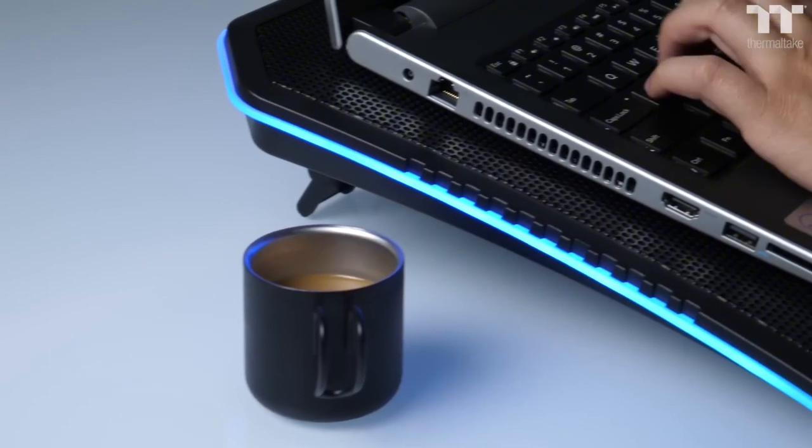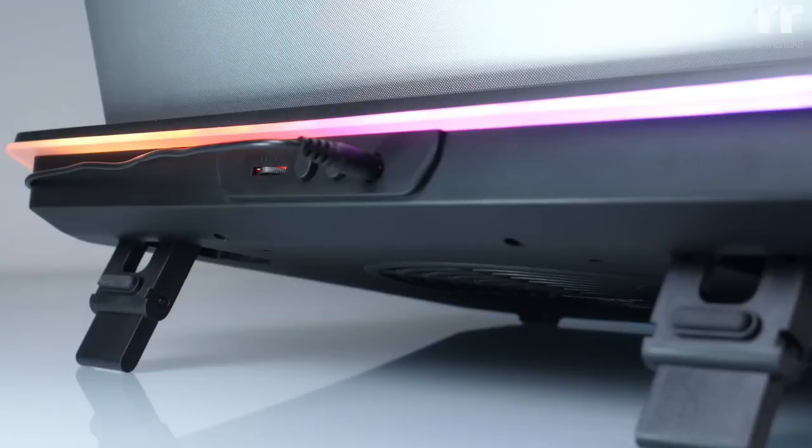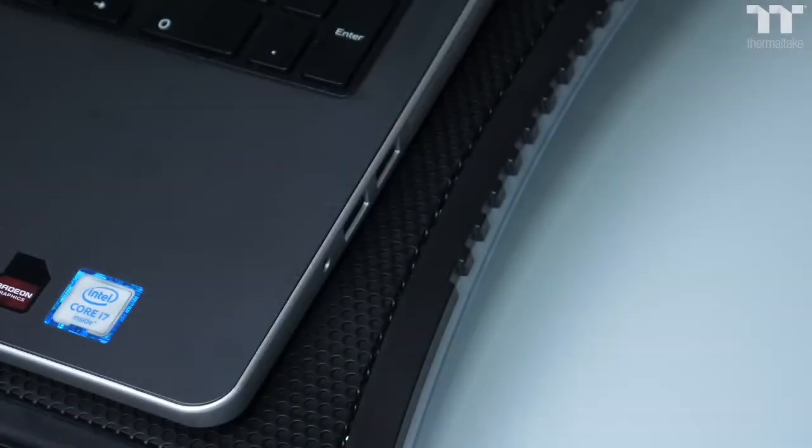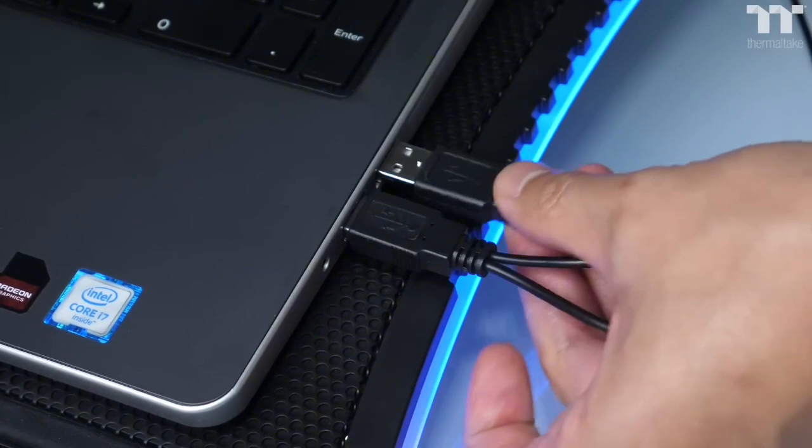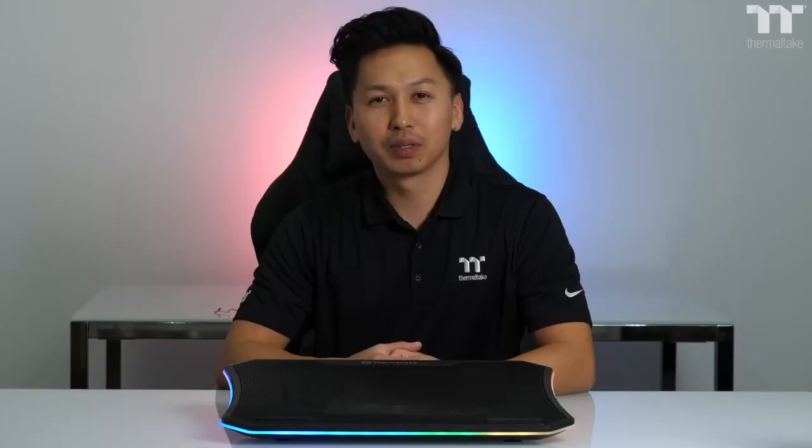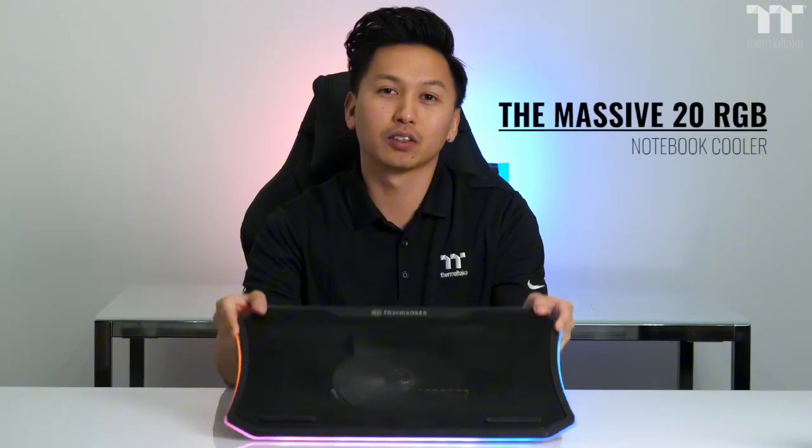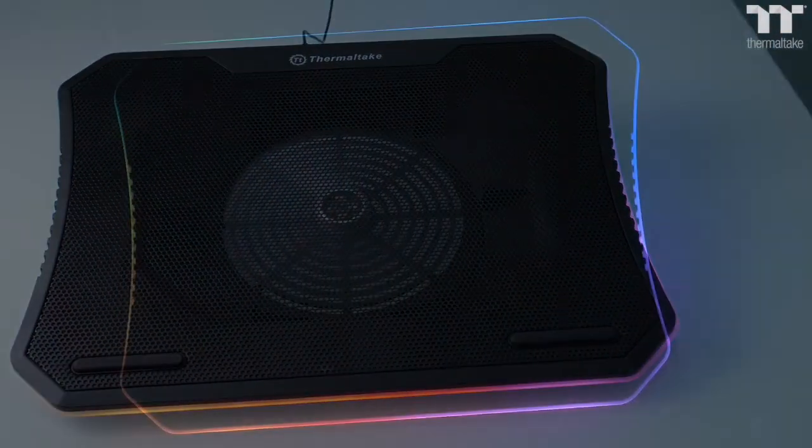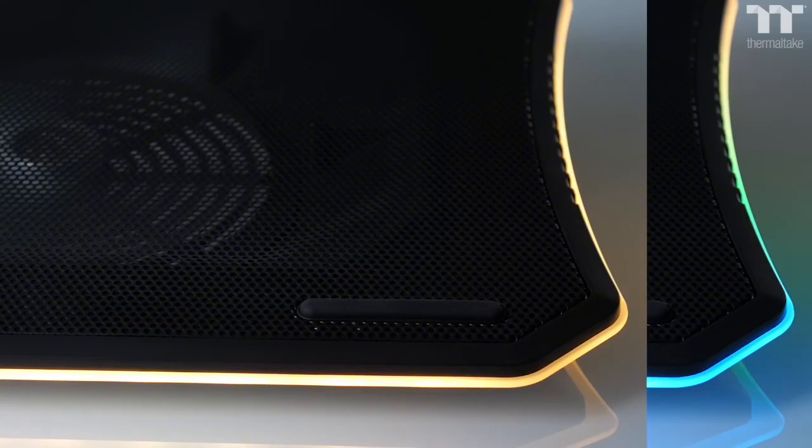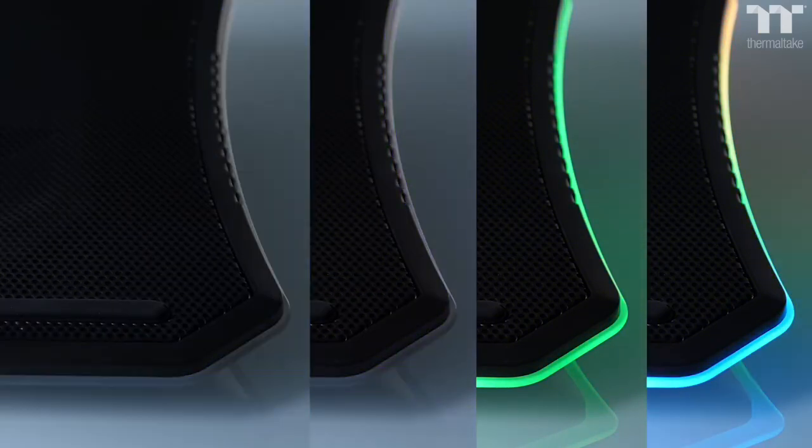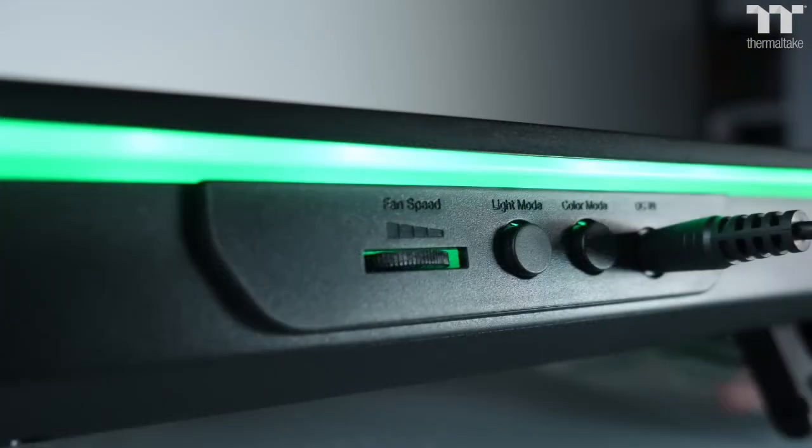The fans are equipped with LED strips that can be controlled through Thermaltake software, allowing you to create a stunning display that's sure to impress. But don't just take our word for it. The Massive 20 RGB has been tested to deliver exceptional performance, with temperatures up to 20 degrees Celsius lower than other popular CPU coolers. With its massive size and impressive cooling capabilities, this cooler is perfect for overclockers, gamers, and content creators who demand the best. Whether you're building a new system or upgrading an existing one, the Thermaltake Massive 20 RGB is the perfect choice for those who want to take their PC to the next level. Order now and experience the power of massive cooling.